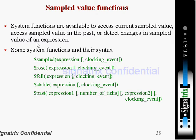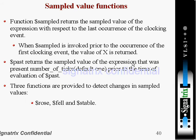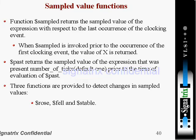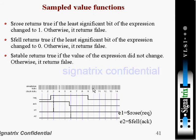These system functions are used to access the current sampled value, access the sampled value in the past, or detect changes in the sampled value of an expression. For example, $sampled takes an expression and a clock event. Let's look at an example to understand. Here we have simulation clock ticks — the numbers indicate clock ticks: one, two, three. The request signal is asserted before the third clock tick.